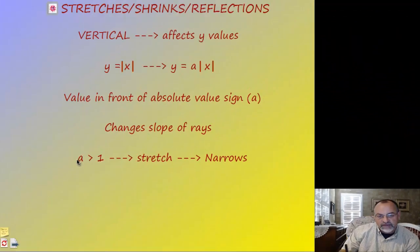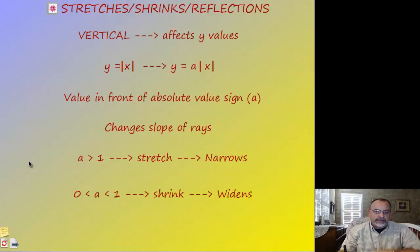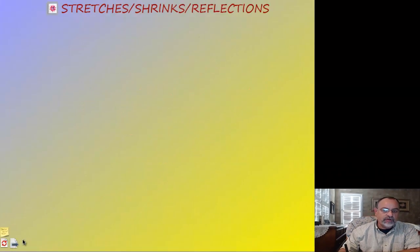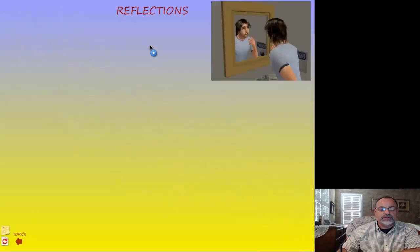If the 'a' value is between zero and one — meaning it's a fraction — then that's a shrink. That's like pushing something down inside the V; you're making the rise smaller and the run bigger, so that's going to widen the V but make the slope less steep.